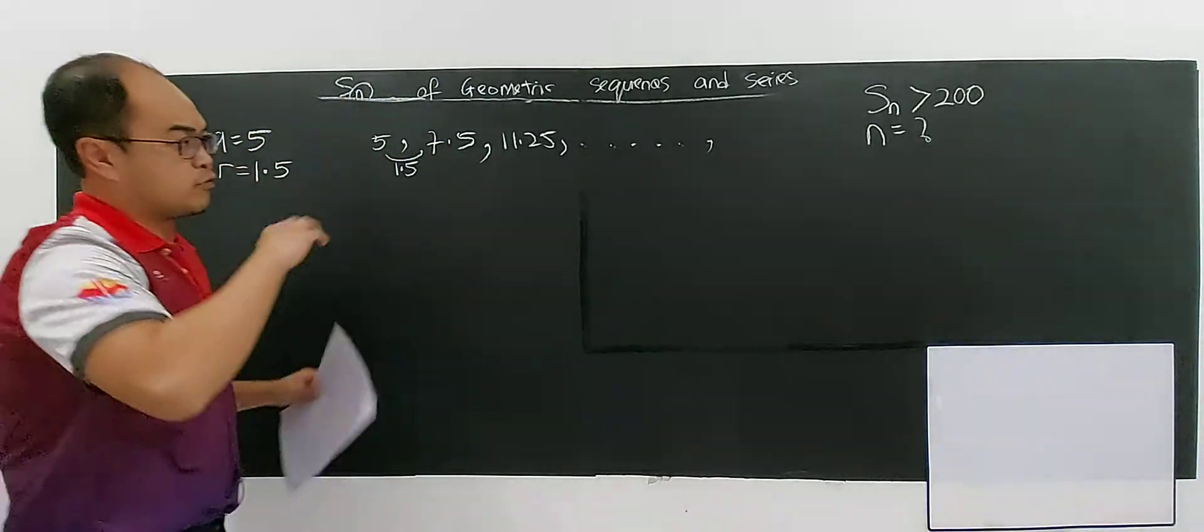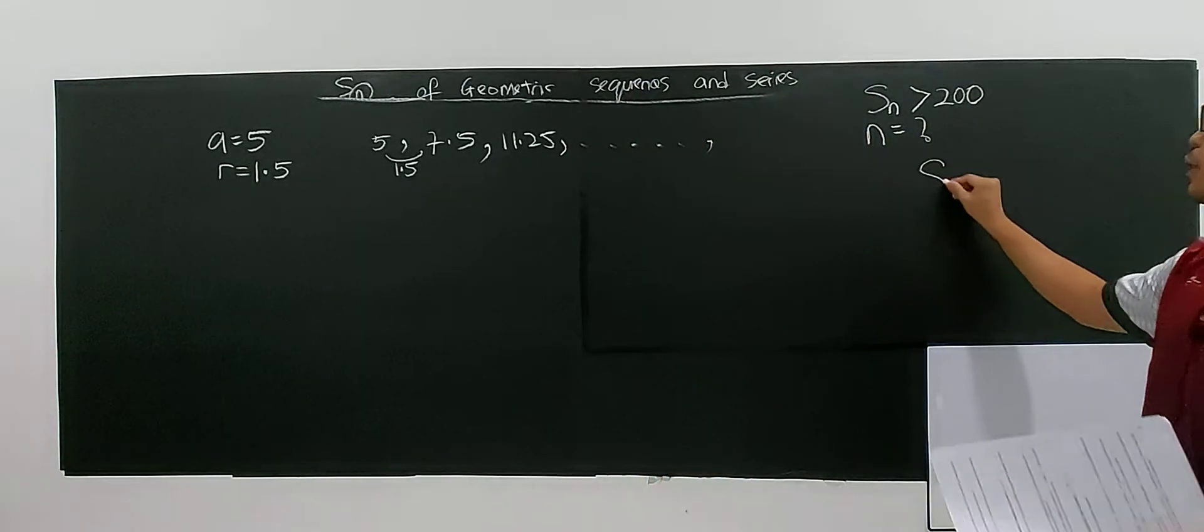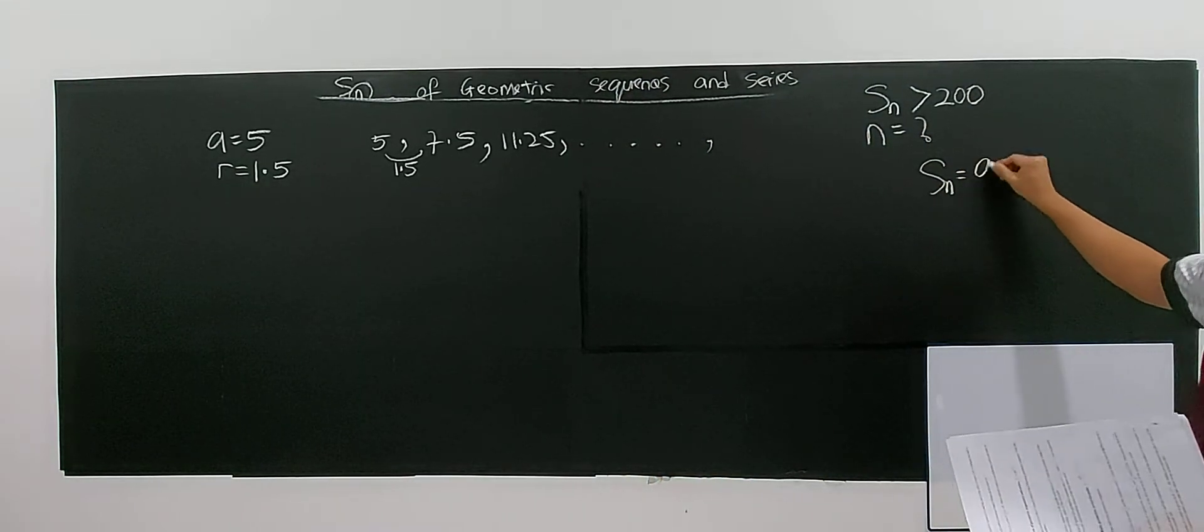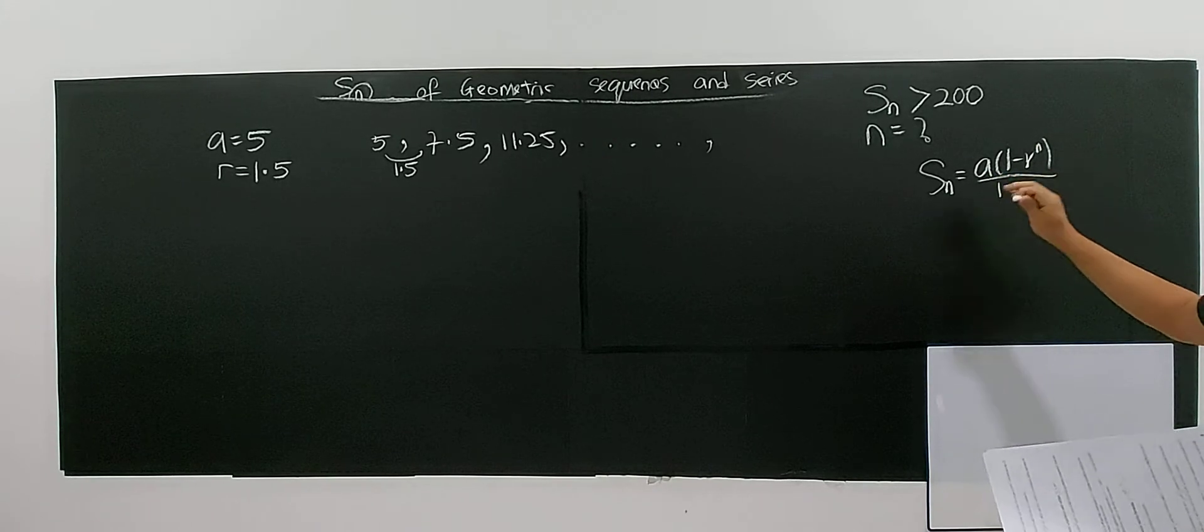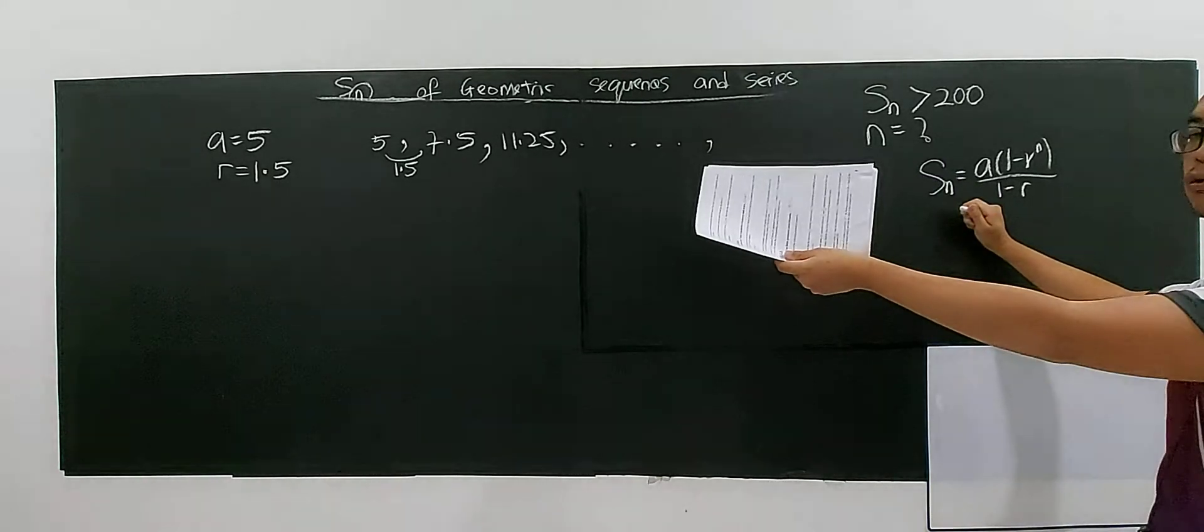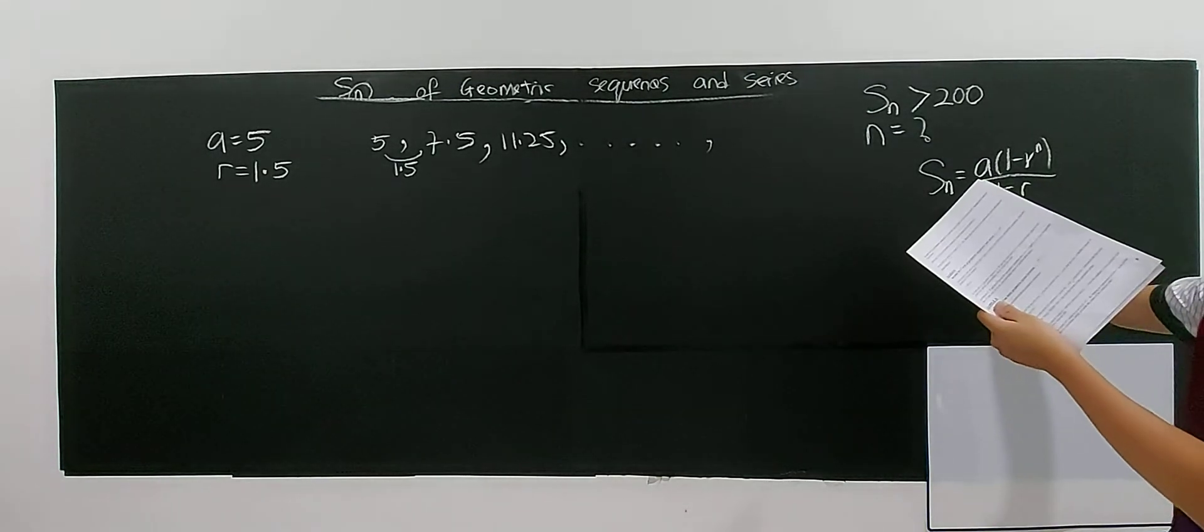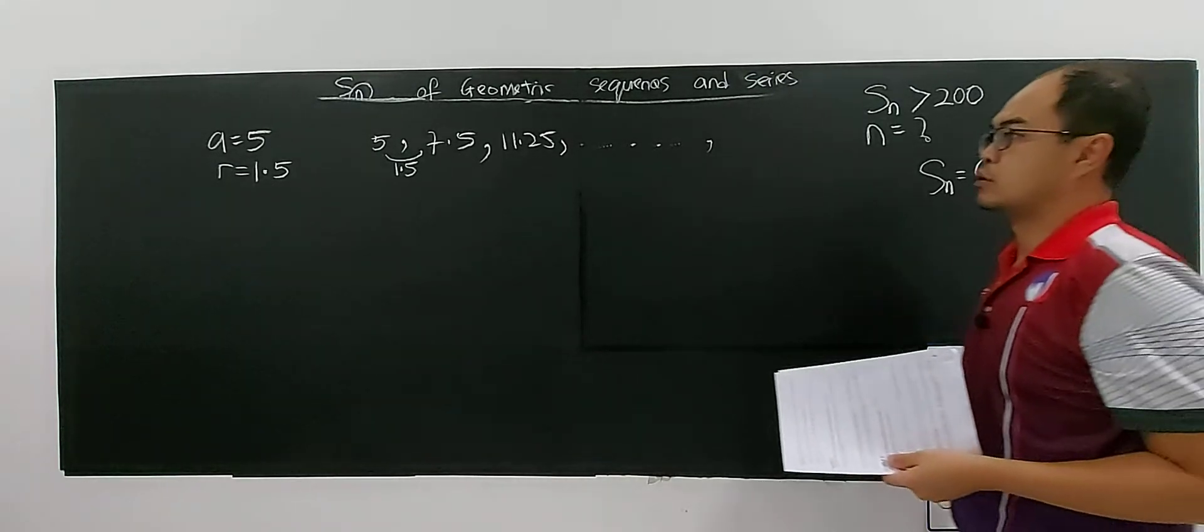So very simple. If you don't know, you can still apply the formula. The formula here is the SN equals A times 1 minus R^n over 1 minus R. I don't use the sum formula for arithmetic because the question already give me common ratio and the question stated already the geometric series.